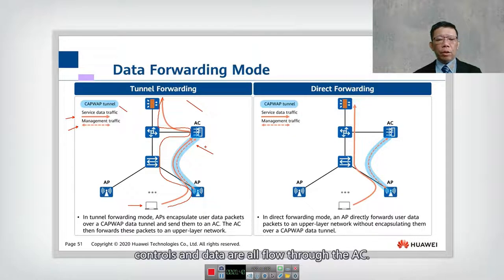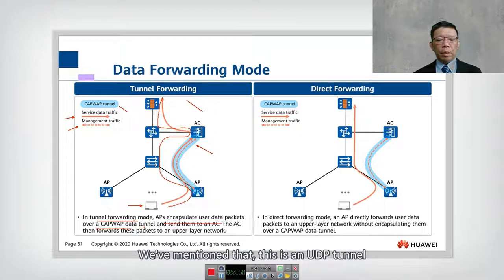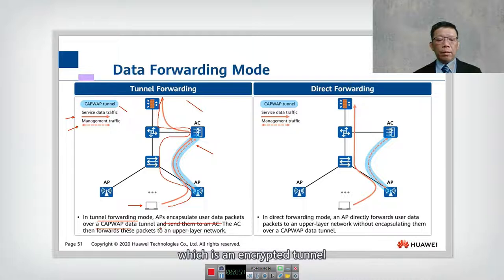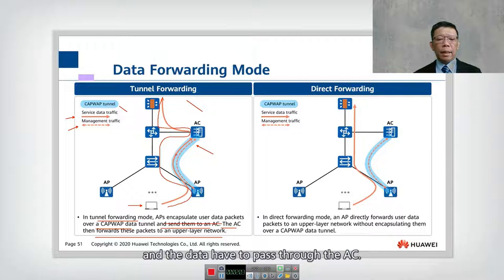In tunnel mode, both control and data flow through the AC. In tunnel forwarding mode, an AP encapsulates data packets over a CAPWAP data tunnel — this is a UDP tunnel using DTLS, which is an encrypted tunnel — and sends them to the AC. The AC then forwards the packets to the upper layer network. This is good because you have centralized control, but the data has to pass through the AC, so your AC will be very busy and could become a potential bottleneck.